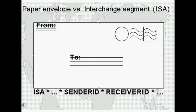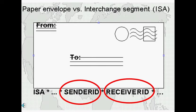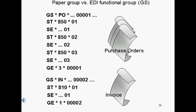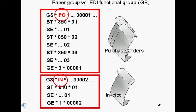Here is a comparison of a paper envelope to the interchange or ISA segment. While an envelope has a to and from post office mailing addresses on it, the interchange segment has the sender's and receiver's electronic IDs in it. Similar to how you would arrange paper documents by grouping them by their departments — for example, purchase orders are grouped together to go to the accounts payable department, while invoices go to the accounts receivable department — so too does the EDI interchange have the functional group to group the transaction sets by their functions.